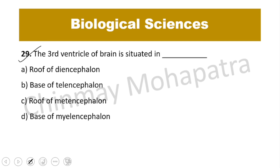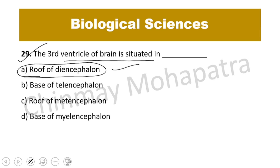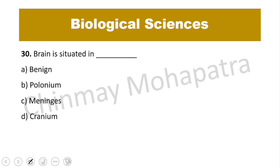Question 29: The third ventricle of the brain is situated in the roof of the diencephalon — that is the right answer. Question 30: The brain is situated in the cranium or cranial cavity, which is protected by the skull bones.